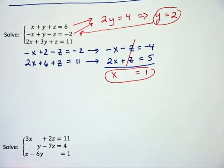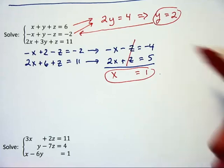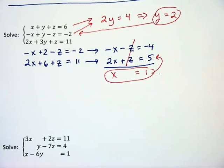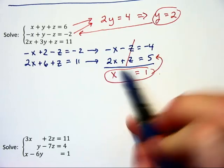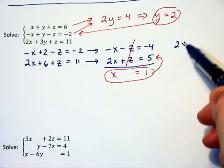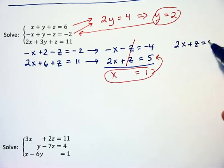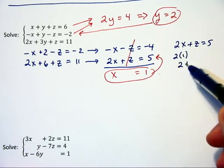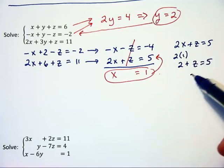Now, we need to find out what z is, and I think the ideal place for us to substitute in is the equation just above where we were at. Because now we can say, instead of 2x plus z is equal to 5, we can say 2 times 1, which is 2 plus z is equal to 5, and have z is equal to 3.